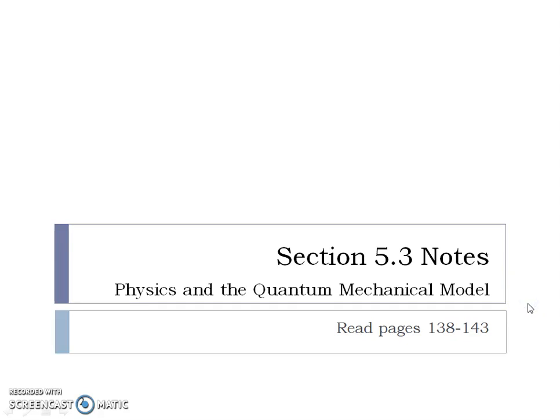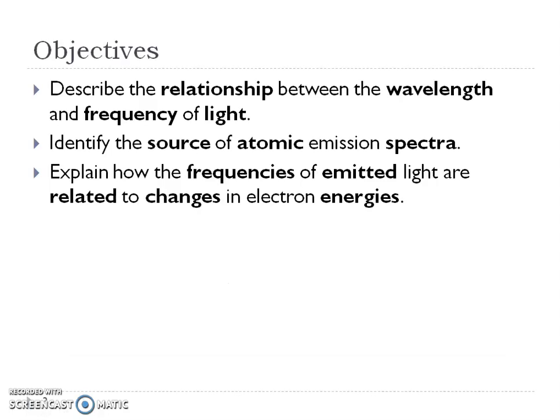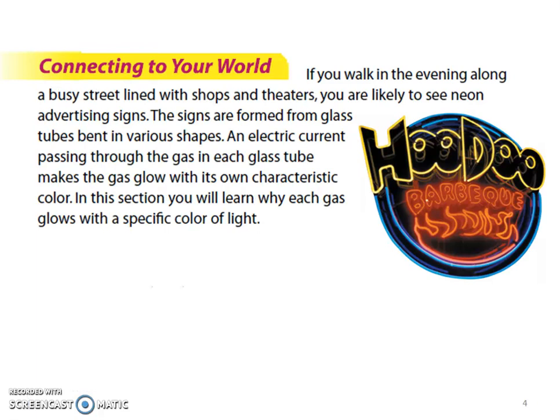This is Mrs. O'Neill for Chapter 5, Section 3, Physics and the Quantum Mechanical Model. In this section, you're going to know the relationship between wavelength and frequency of light. You're going to understand the atomic emission spectra, and you're going to explain how frequencies emit light that are related to the changes in electron energies.